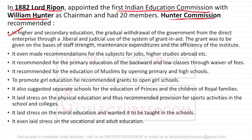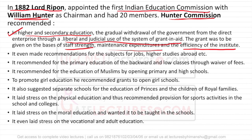The first recommendation was that at the higher and senior education level, there should be a gradual withdrawal of the government. The government should not have total control over education but should withdraw slowly. He also believed in a liberal and judicial use of the system of grants — grants should be given to private institutes to open institutions, but only on the basis of staff strength, maintenance expenditures, and the efficiency of the institute.